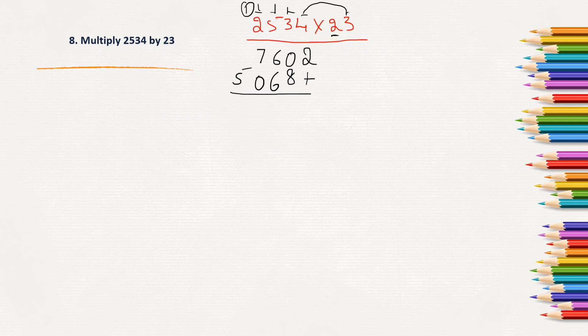Now, we will have to add both the products. So, here, 2 plus nothing is 2 itself, 0 plus 8 is 8, 6 plus 6 is 12, 1 carry, 7 plus 1, 8, 5 and nothing, 5 itself. So, the product of 2534 into 23 is 58,282.